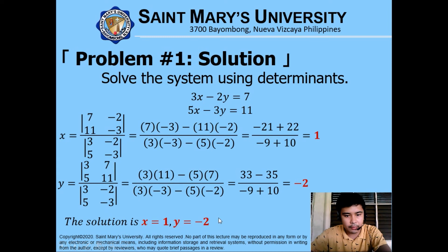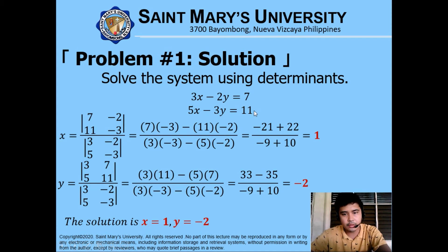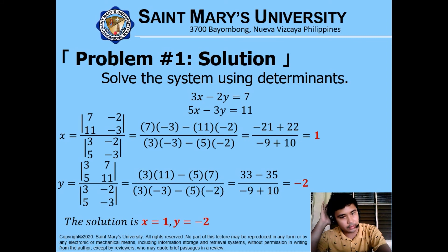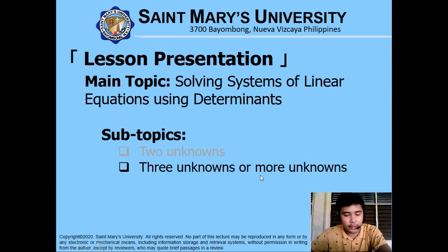You can verify the answer by substituting the values of x and y back into the original equations — it should give 7 for the first equation and 11 for the second. You can also verify using substitution or elimination methods from past lessons. Now let's proceed to the next subtopic: three or more unknowns using determinants.